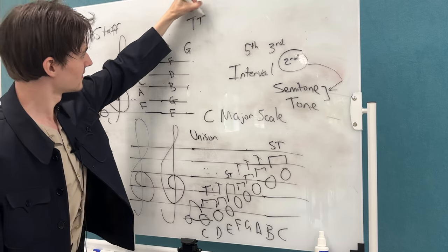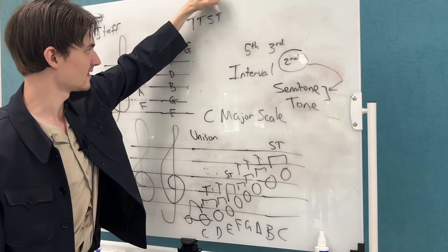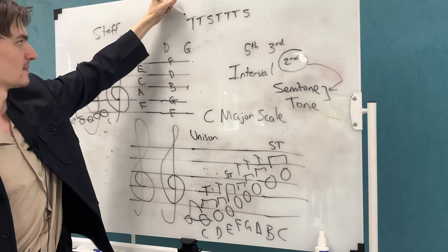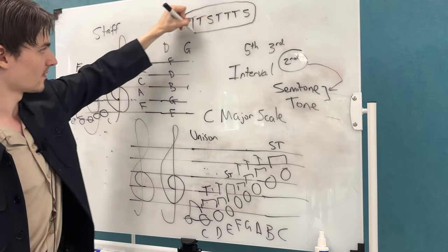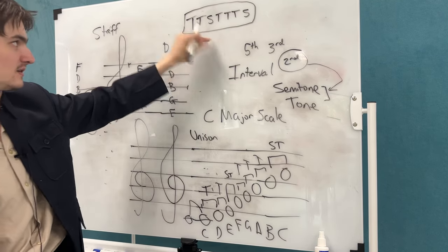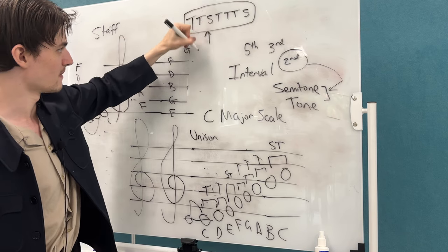So T, T, S, T, T, T, S. This is what we might call a formula in mathematics. It describes, that is basically the formula, the description for every major scale. This is the description of every major scale.